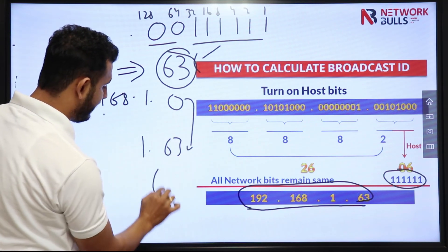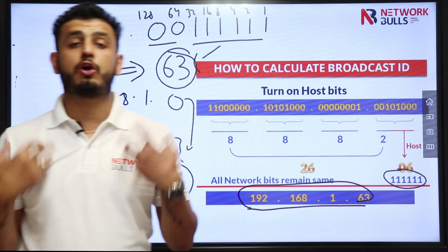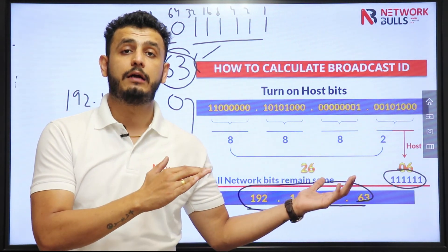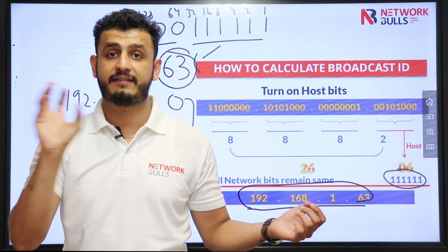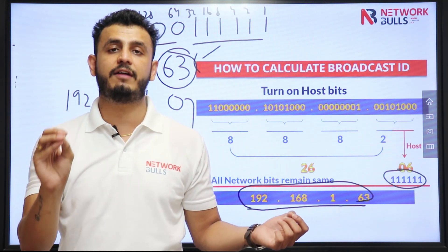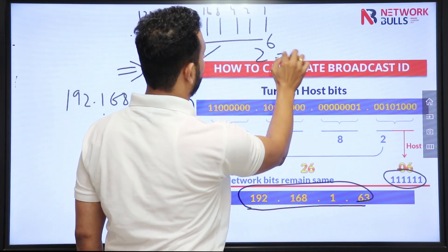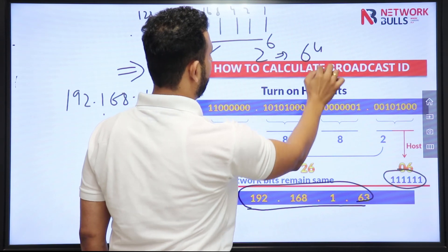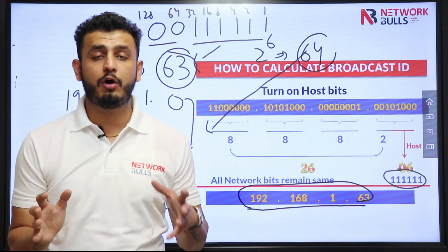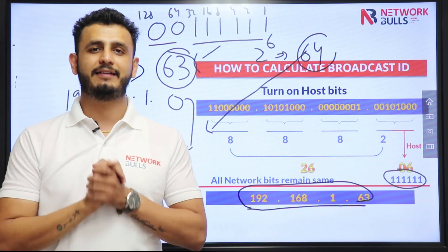How many total hosts are there? 64. Cross-checking: there were 26 network bits, so there are 6 host bits, and 2 to the power of 6 is always 64. So in this video we have discussed how to calculate network ID and broadcast ID. Thank you.